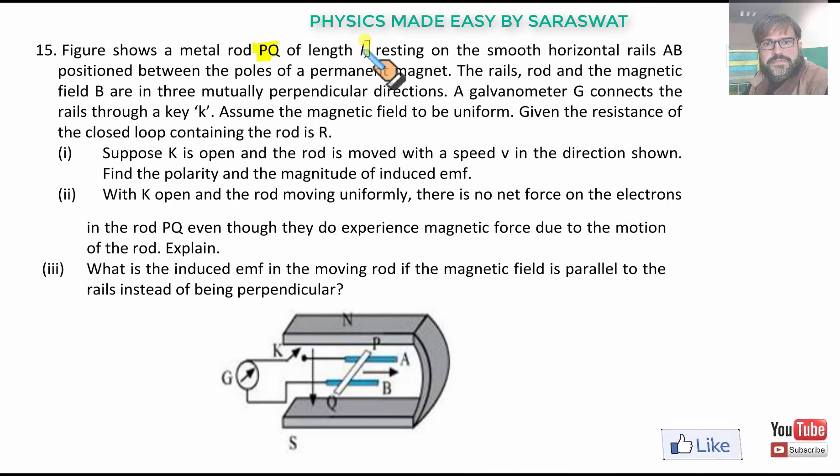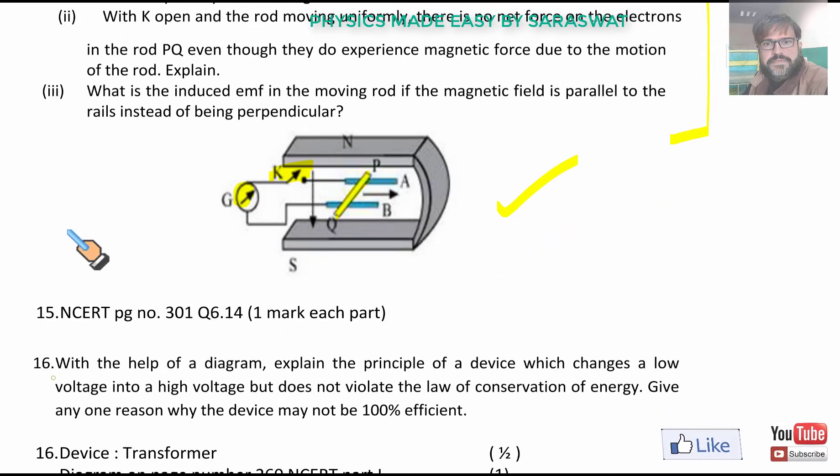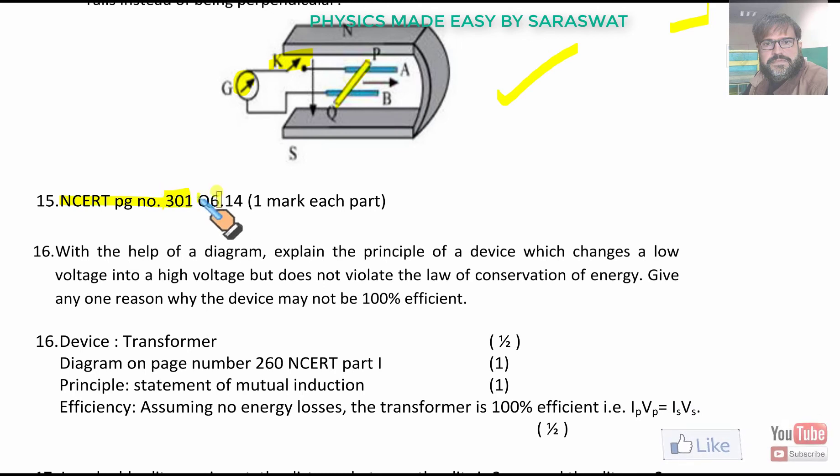Figure shows a metal rod PQ of length L resting on the smooth horizontal rails AB positioned between the poles of a permanent magnet. This is NCERT question. The rails, rod and the magnetic field B are in three mutually perpendicular directions. The galvanometer G connects the rails through a key K. Assume the magnetic field to be uniform. Give the resistance of the loop containing the rod R. This is NCERT page 301 question 6.14.